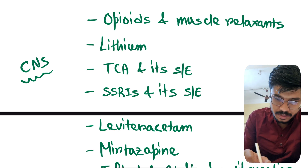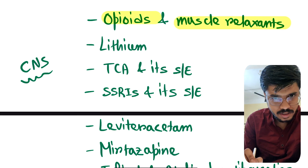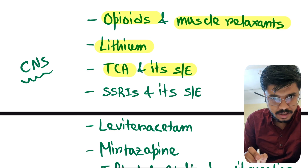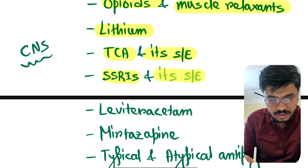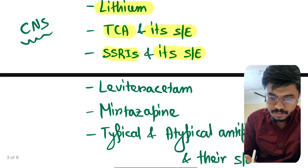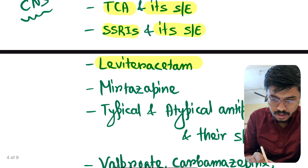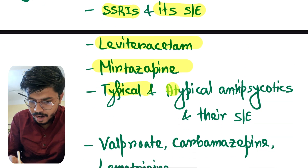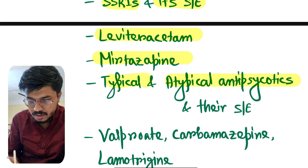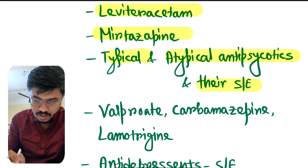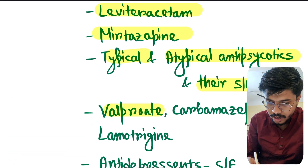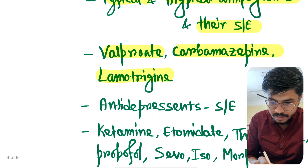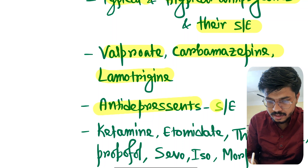From CVS: opioids, muscle relaxants, lithium, TCA and its side effects, SSRI and its side effects, levetiracetam, mirtazapine, typical and atypical antipsychotics and their side effects — these are very important. Valproate, carbamazepine, lamotrigine — very very important. Antidepressants and their side effects.